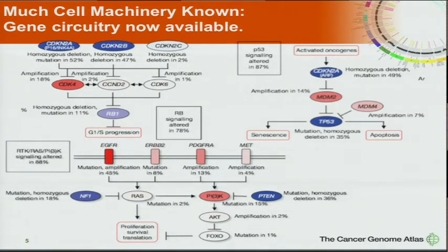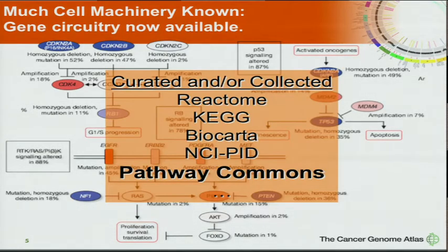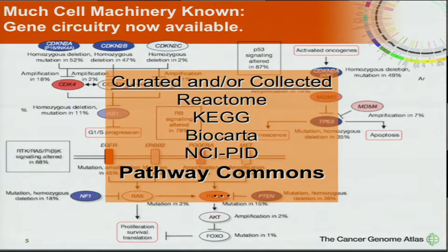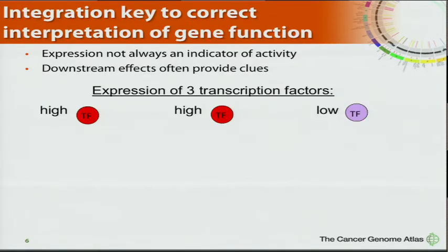In cellular systems, we have put together at least some of the circuitry and the machines inside cells, so we should use those. I'm going to show you a system that defines a computational model to represent these types of systems. We benefit from many efforts: Reactome, KEGG, BioCarta, NCIPID, many different institutions. Our favorite, which combines all of them, is Pathway Commons from Memorial Sloan-Kettering. We try to take in all that data to learn something about what's going on in a cell.